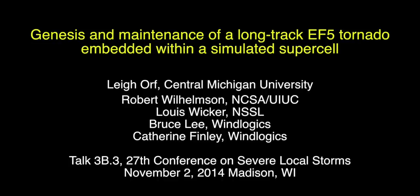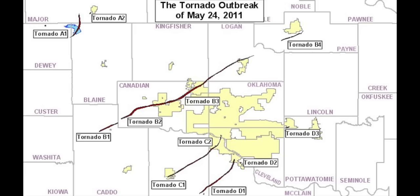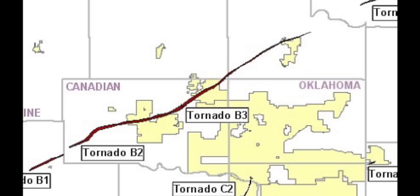So this is a talk about a simulation I've been looking at for a little while. You're all probably familiar with the May 24, 2011 storm, at least several storms. One of the tornadoes was a long-track EF-5, and we are simulating a storm that's in this basic environment. This is Tornado B2, the one that we think is most closest to the tornado that forms in the storm that we are simulating.